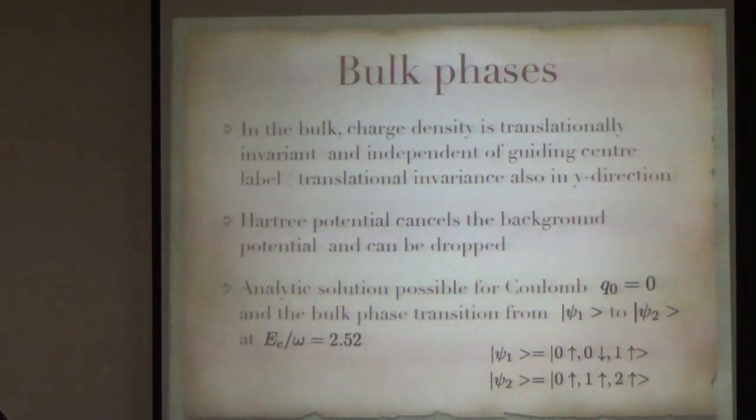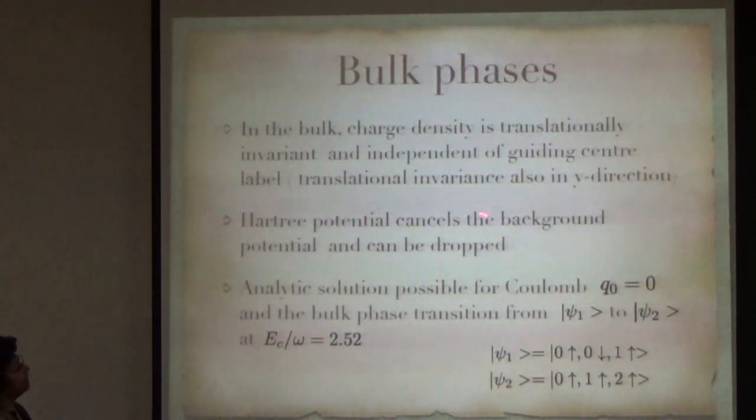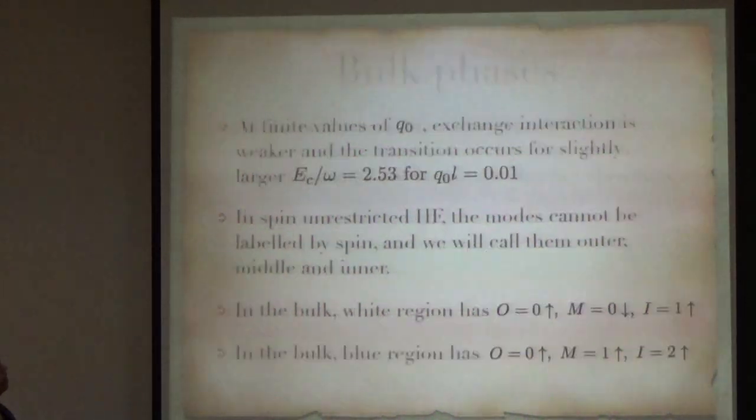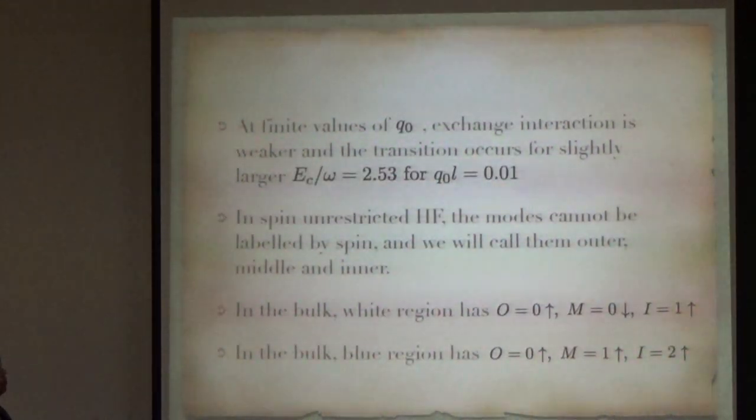This is just some technicalities of how we get that bulk phases. It can even be done analytically for q naught equal to 0. And, for the numerical values, we took q naught L is equal to 0.01. And then, there is only a very small change from 2.52 to 2.53 for this.